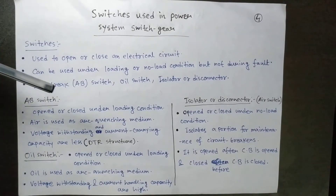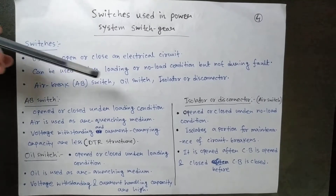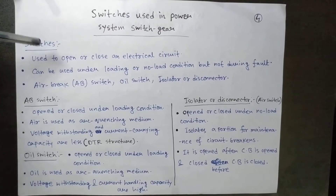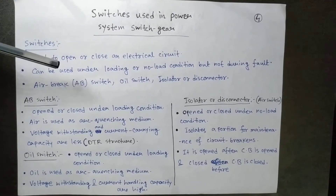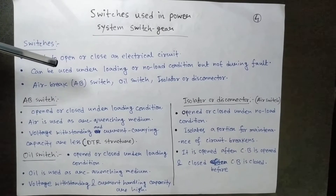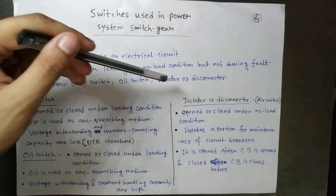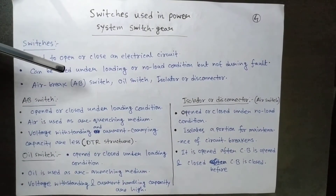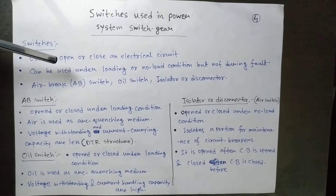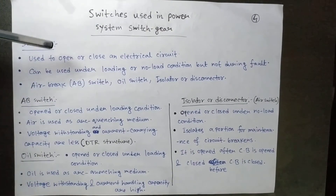There are different kinds of switches available: the air brake switch, oil switch, and isolator or disconnector. Basically there are two categories — air type and oil type. The air brake switch and isolator both fall under the air medium category, while the oil switch is different.